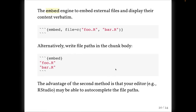The third engine is the embed engine, which lets you embed external text files and display their content verbatim — similar to the verbatim engine but you use the file option to point to external file paths instead of writing content in the chunk body. Alternatively, you can write file paths directly in the chunk body of the embed engine, for example "foo.r" and "bar.r". Writing file paths in the chunk body has a small advantage: your editor, such as RStudio, may be able to auto-complete the file paths.